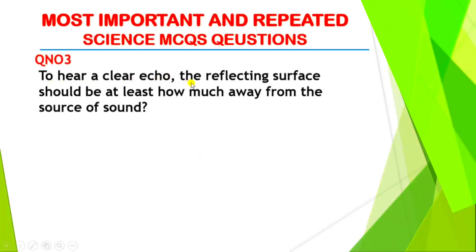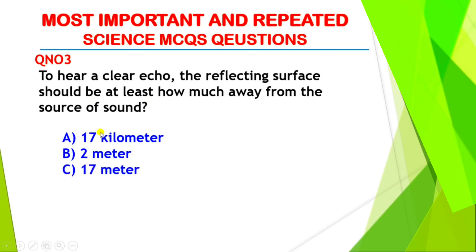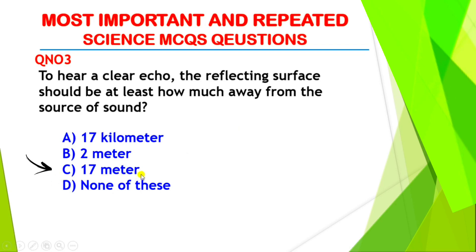Question number three: to hear a clear echo, the reflecting surface should be at least how far away from the source of sound? An echo occurs when sound travels and collides with a hard surface, then bounces back to the listener. The right answer is option C, 17 meters — the reflecting surface must be at least 17 meters away from the source of sound to hear a clear echo.